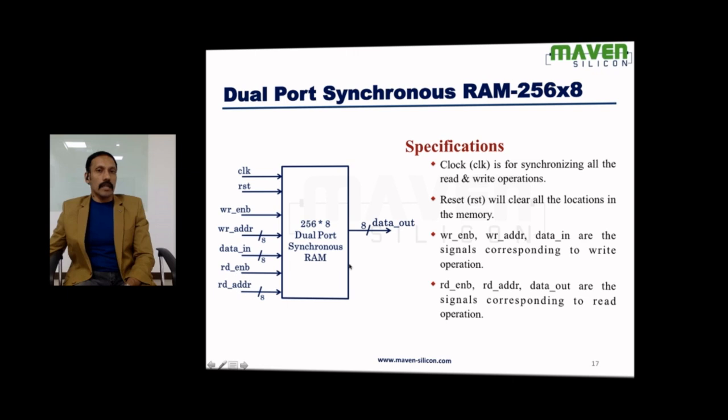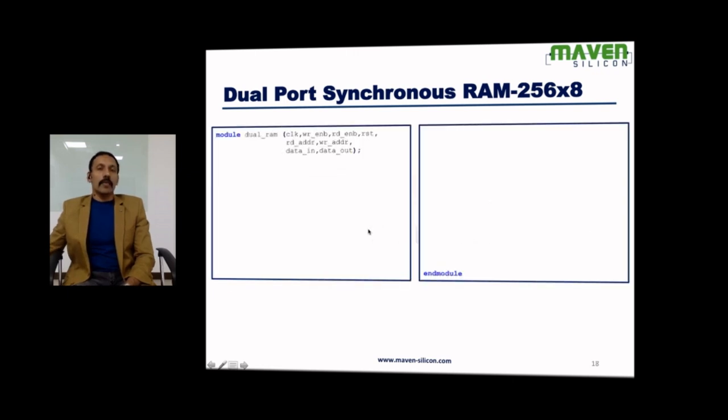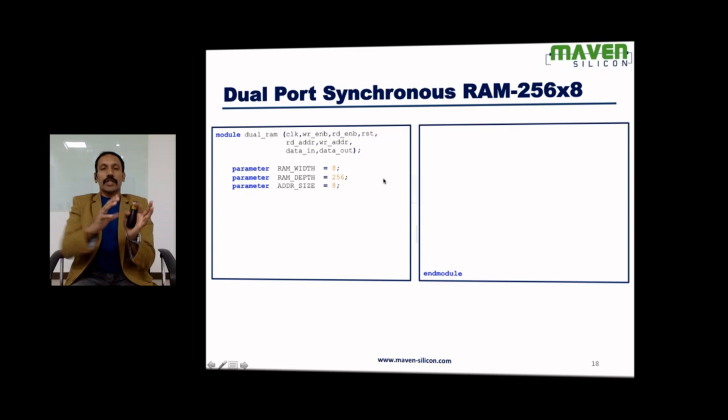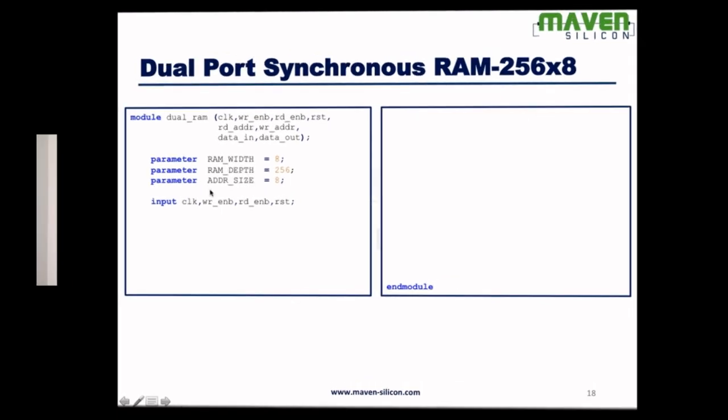Read interface-wise: read enable, read address, data out. Let's look at how it works. Here both write and read happen at the clock edge. Module name of the module, all the ports I'm planning to use parameter because I want to change the width and depth anytime later.